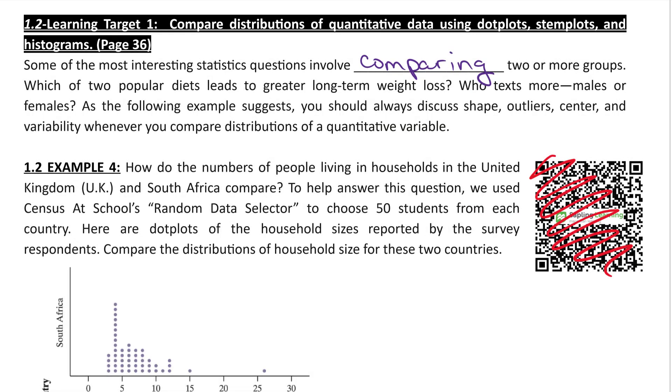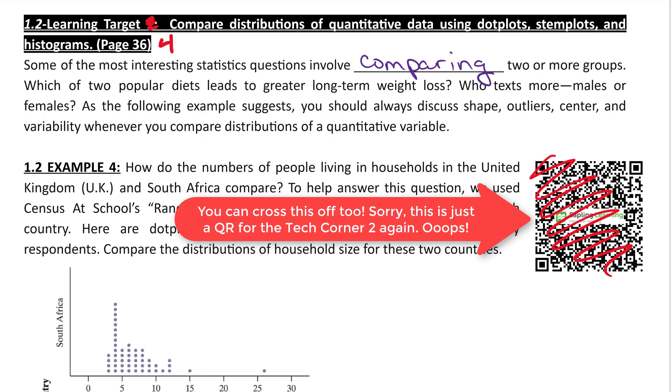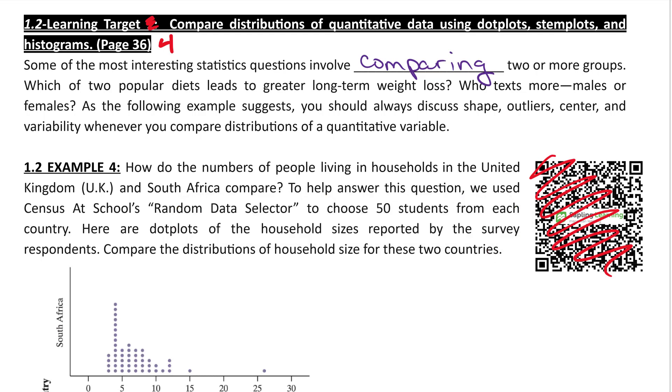Alright. So we're getting into our last learning target for 1.2. This isn't number one. This should be LT number four. Comparing distributions of quantitative data using dot plots, stem plots, and histograms. We're going to work on all of these eventually. The example four is with dot plots. But you could also compare distributions with back-to-back stem plots or with histograms. Just like describing, we want to talk about the shape, outliers, center, and variability. But you're not just describing the two separately. Part of the AP rubric is going to emphasize that you compare them. So that's what we're going to focus on that difference between comparing and describing in our example four.